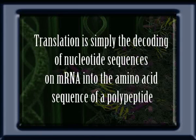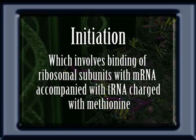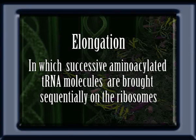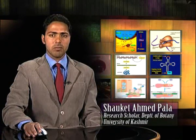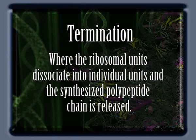Hello and welcome, dear viewers. Today we will discuss translation. Translation is simply the decoding of nucleotide sequences on mRNA into the amino acid sequences of a polypeptide. The process of translation can be divided into three distinct activities: initiation, which involves binding of ribosomal subunits with messenger RNA accompanied with transfer RNA charged with methionine; elongation, in which successive aminoacylated transfer RNA molecules are brought sequentially on the ribosomes; and termination, where the ribosomal unit is dissociated into individual units.